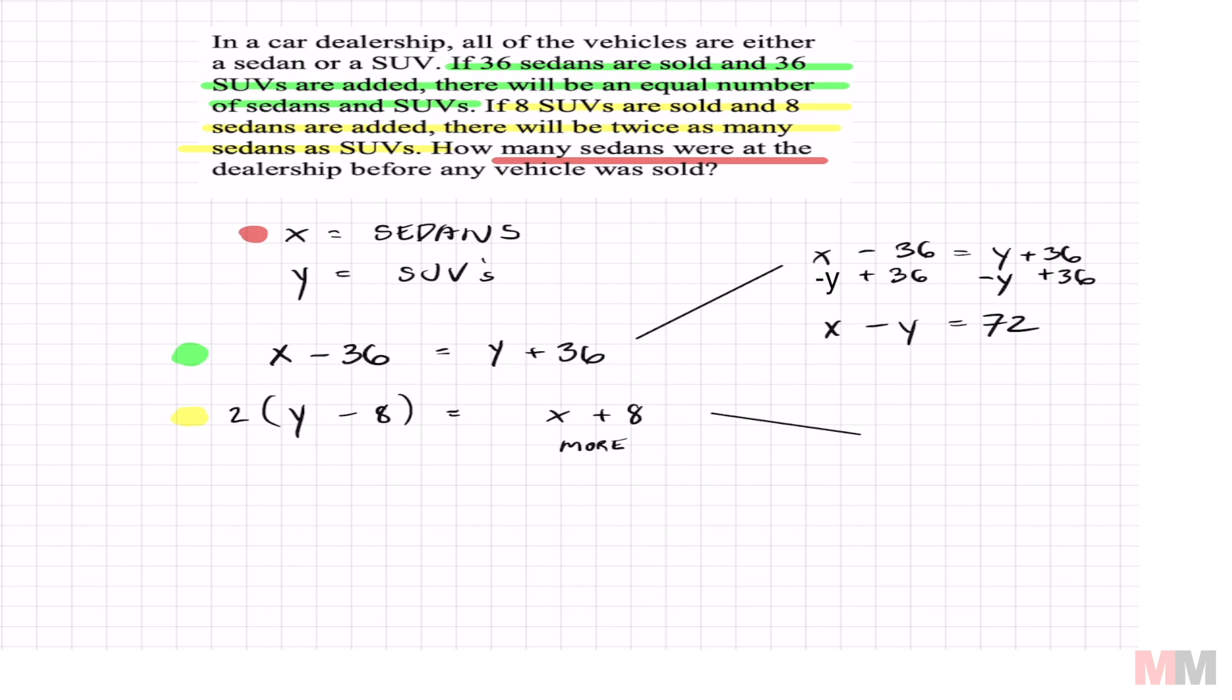Simplifying this one, I'm just going to distribute it. So I write less. It's going to be 2y minus 16 equals x plus 8. Put it in standard form. Just subtract x and add 16. You can do two things at the same time. Negative x plus 2y equals 24.